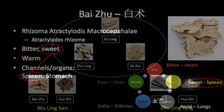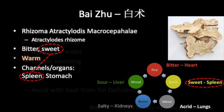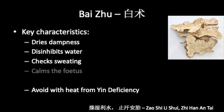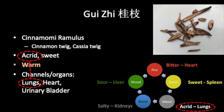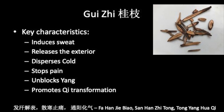Bai Zhu is white Atractylodes root, frequently found in Zhang Zhongjing's formulas. It is bitter, sweet, and warm, associated with the spleen and stomach. Like Fu Ling, it dries dampness, disinhibits water, and checks sweating. As a drying herb, it should be avoided when there is heat from yin deficiency or if fluids are exhausted. Gui Zhi is cinnamon twig, one of the most discussed herbs in the Chinese pharmacopoeia. It is acrid, sweet, and warm, associated with the heart, lungs, and urinary bladder channels. It induces sweat and releases the exterior, disperses cold, stops pain, unblocks yang, and promotes qi transformation. Like Bai Zhu, it should be avoided when there is heat from yin deficiency.